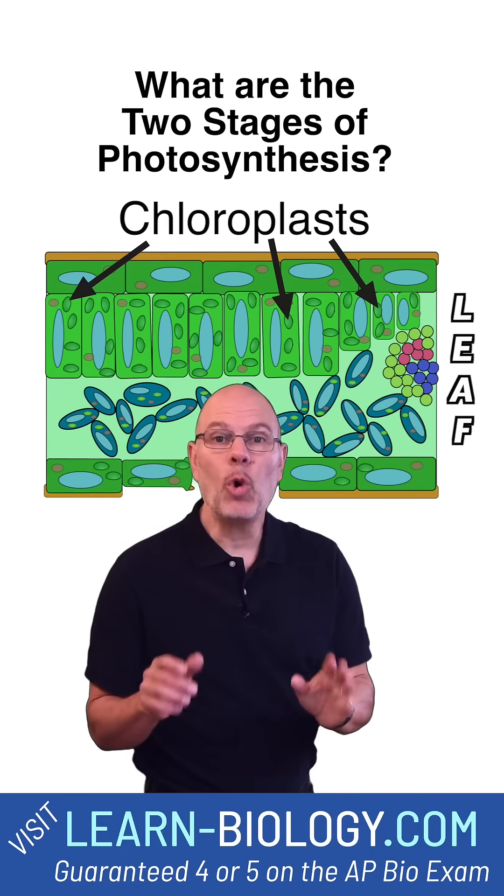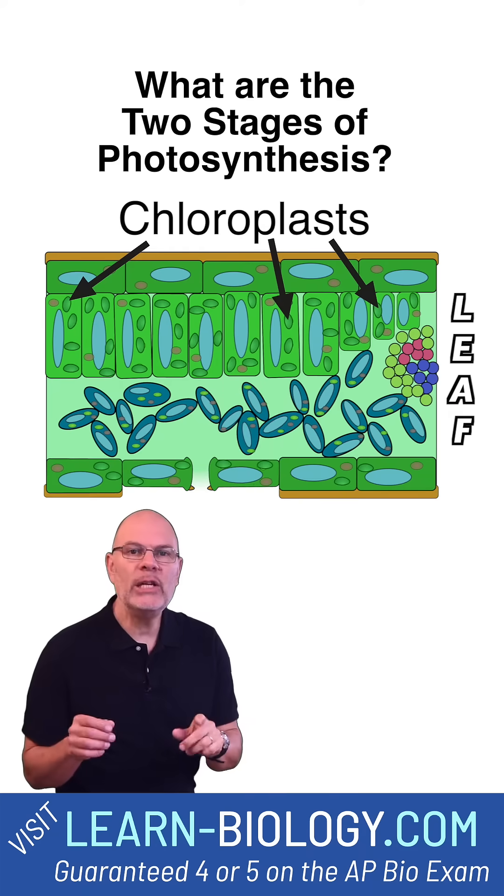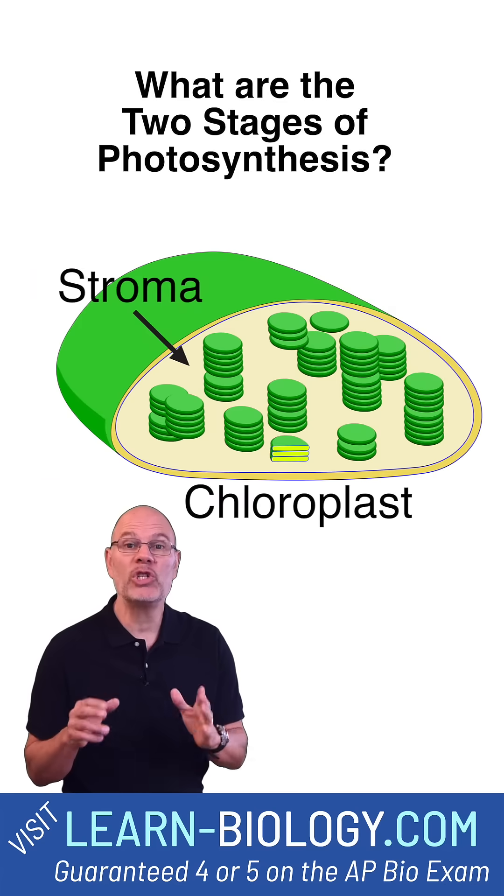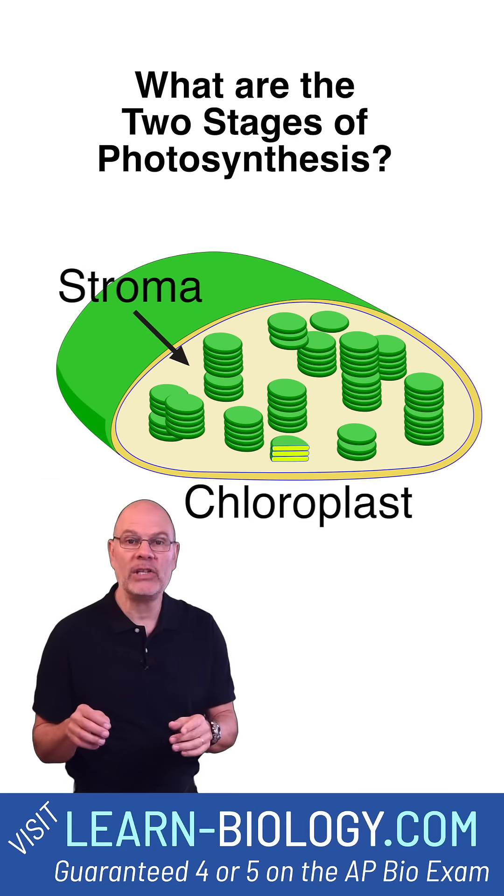Photosynthesis occurs in plant cells and organelles called chloroplasts. The inner fluid of the chloroplast is called the stroma. It's equivalent to the cytosol of a eukaryotic cell.